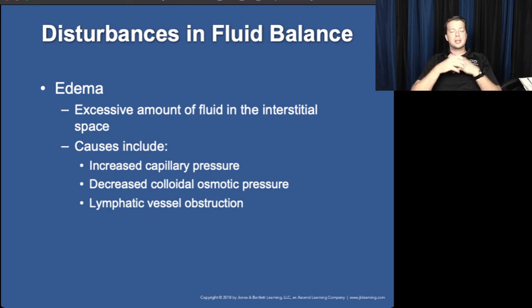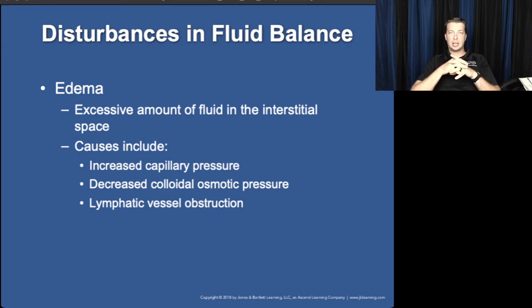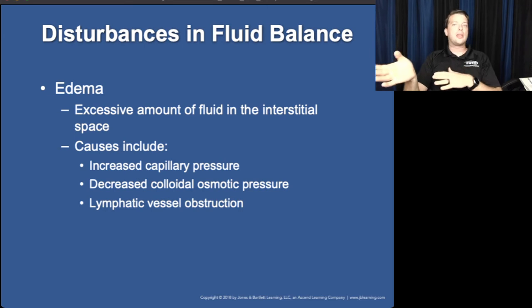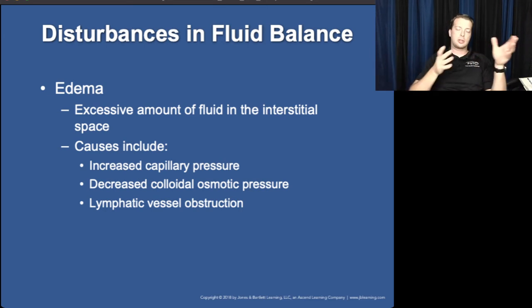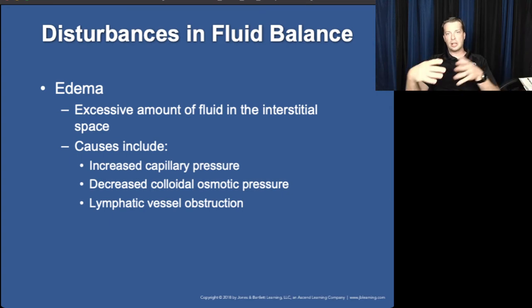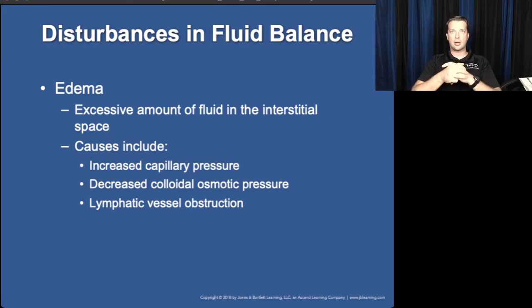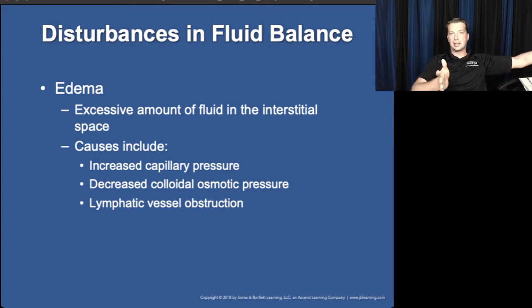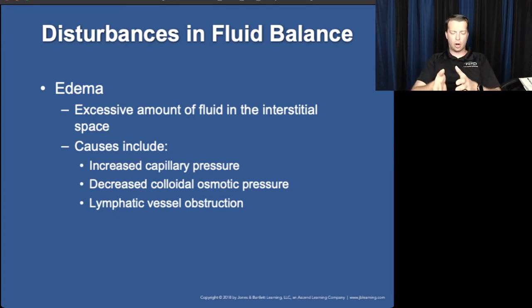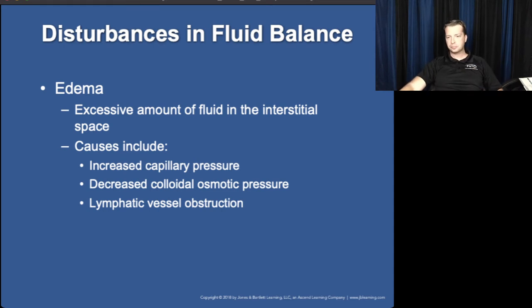A number of conditions cause edema; one is the heart not pumping efficiently. If the right side of the heart doesn't pump efficiently, you get a backlog of blood in the periphery. If the left side isn't pumping efficiently, it backlogs blood into the lungs. Think of heart failure like a traffic jam — when there's a wreck on a highway, traffic backs up behind that wreck. So with left-sided heart failure, everything backs up into the lungs — what's right before the left side.